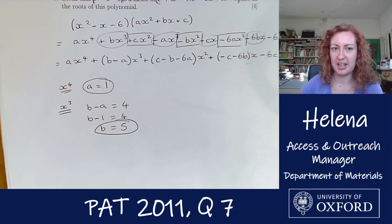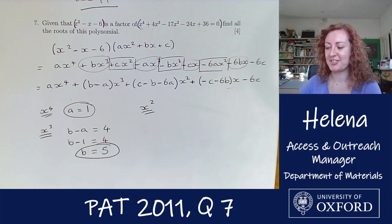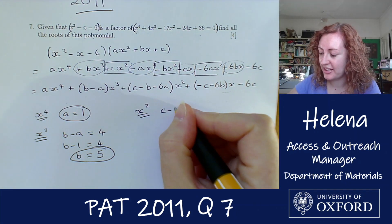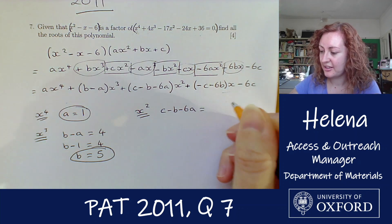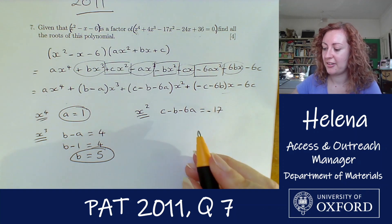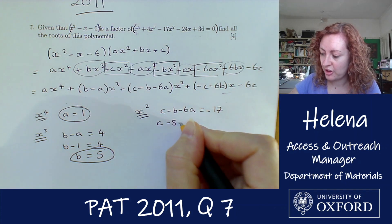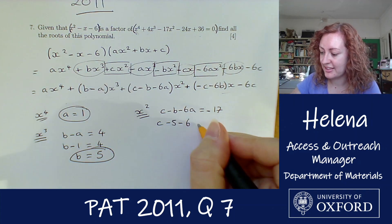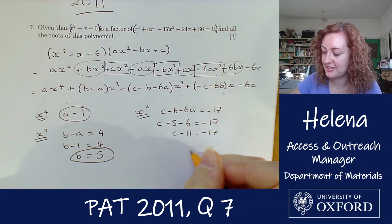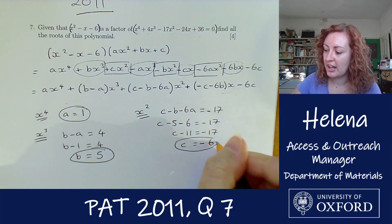For the x squared term: c minus b minus 6a equals minus 17. Substituting in our values, c minus 5 minus 6 equals minus 17, so c minus 11 equals minus 17, which means c equals minus 6. We've now found all three coefficients.